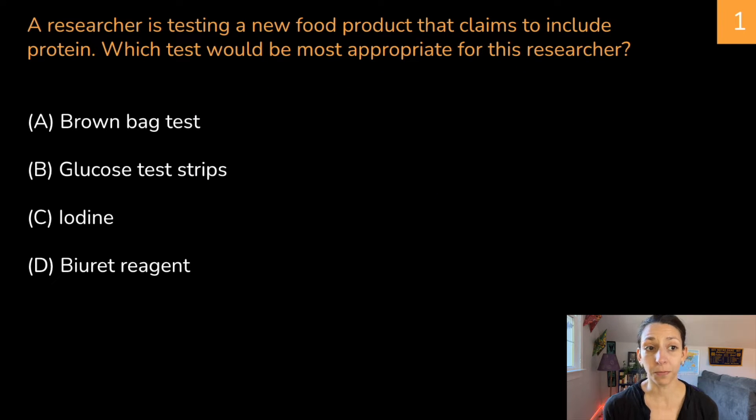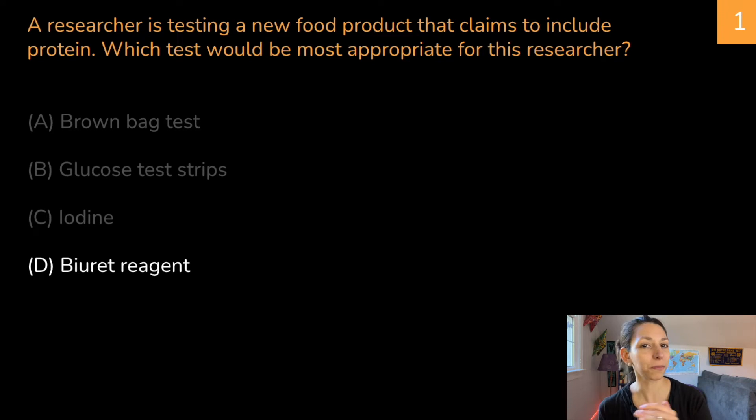A researcher is testing a new food product that claims to include protein. Which test would be most appropriate for this researcher? Think about it. Correct answer is D, Biuret reagent. Biuret reagent will turn purple in the presence of protein. That would be the most appropriate test here. Remember, as we go through these practice problems, try to get the answer on your own. You can pause the video if you need more time to think or mute me. Go through these questions at your own pace. Let's keep going.